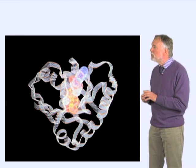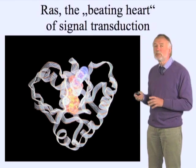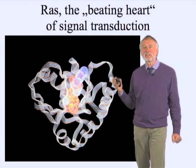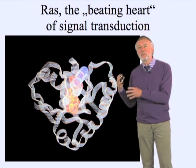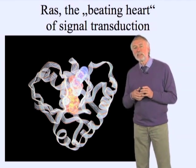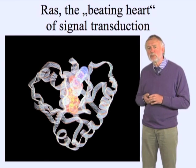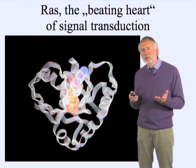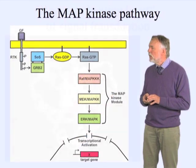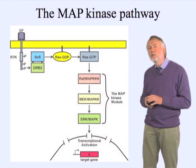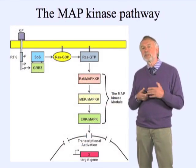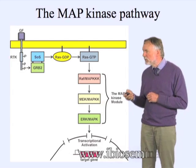But the most important reason it's heart-shaped is because people call it the beating heart of signal transduction. It's one of the most important molecules that regulates important signal transduction processes like growth, differentiation, and sometimes even apoptosis. You probably know a little bit about the signal transduction process because every textbook has this version.